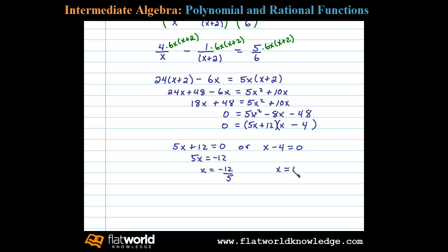In this case we have x equals 4. And in this case we're looking for consecutive even integers, and negative 12/5 is not an integer, so we'll choose x equals 4 to be our only solution.